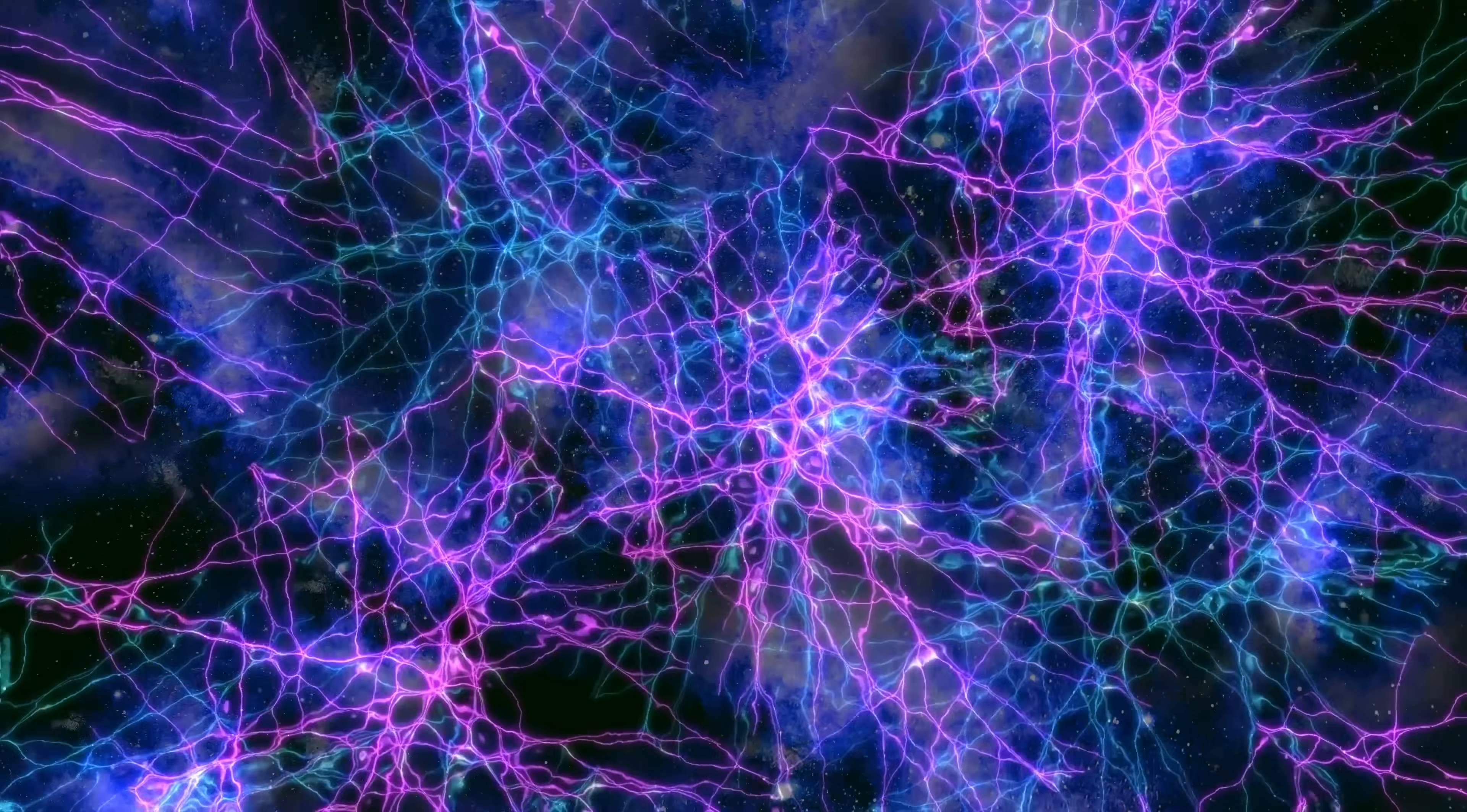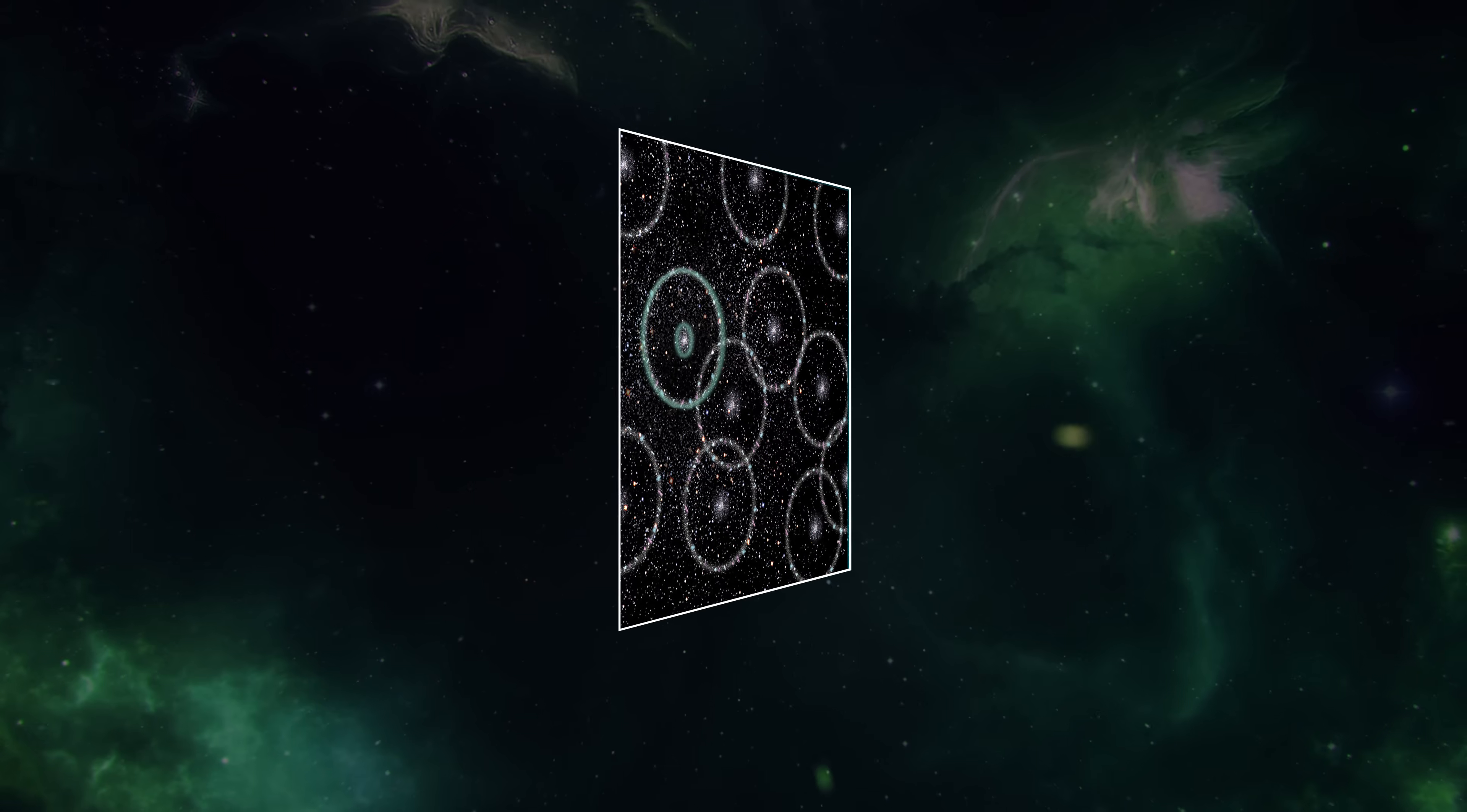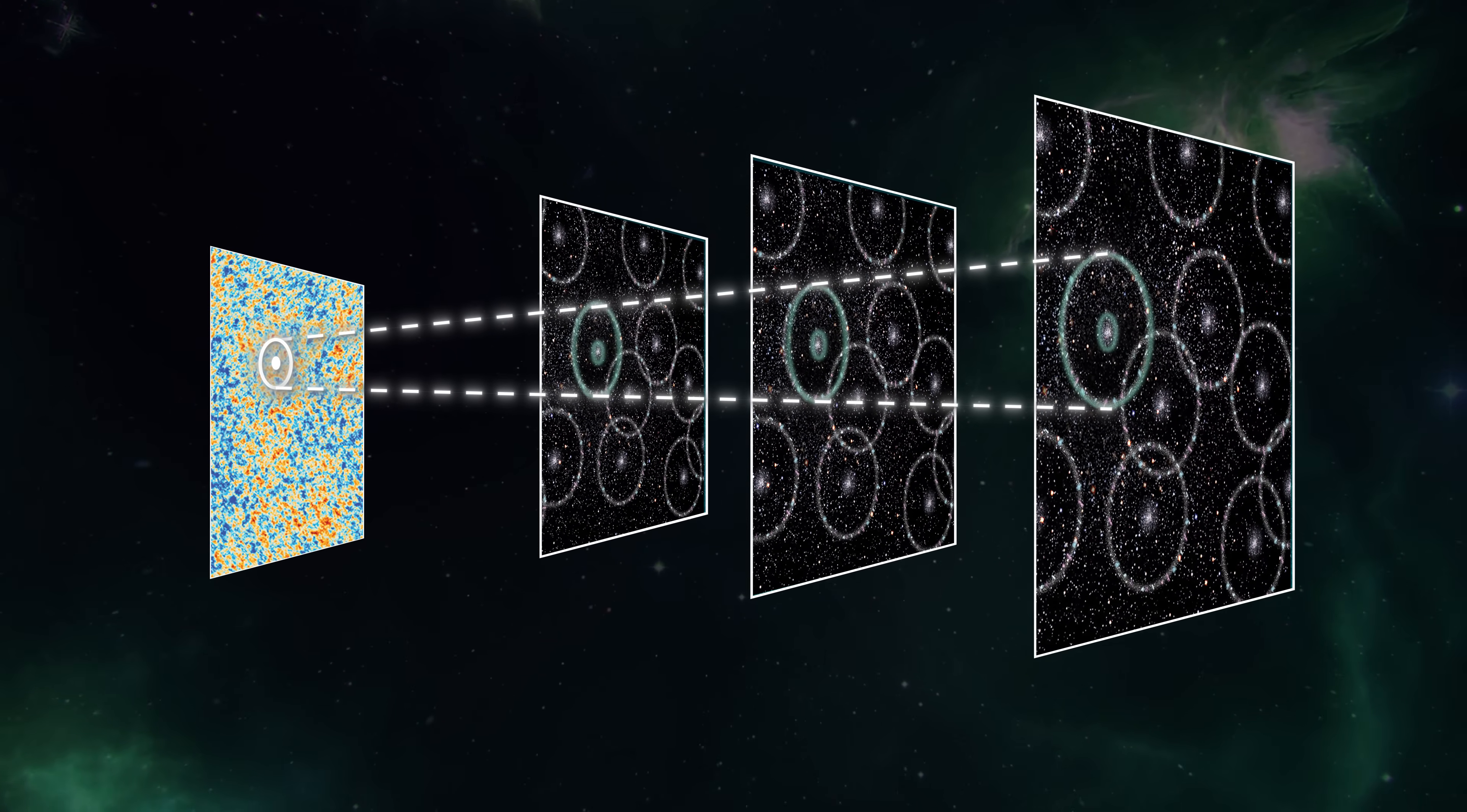These ripples, or acoustic waves, left their mark on the distribution of matter in the universe. As the universe expanded and cooled, these acoustic waves froze in place, imprinting a unique pattern into the cosmic microwave background, the afterglow of the Big Bang.